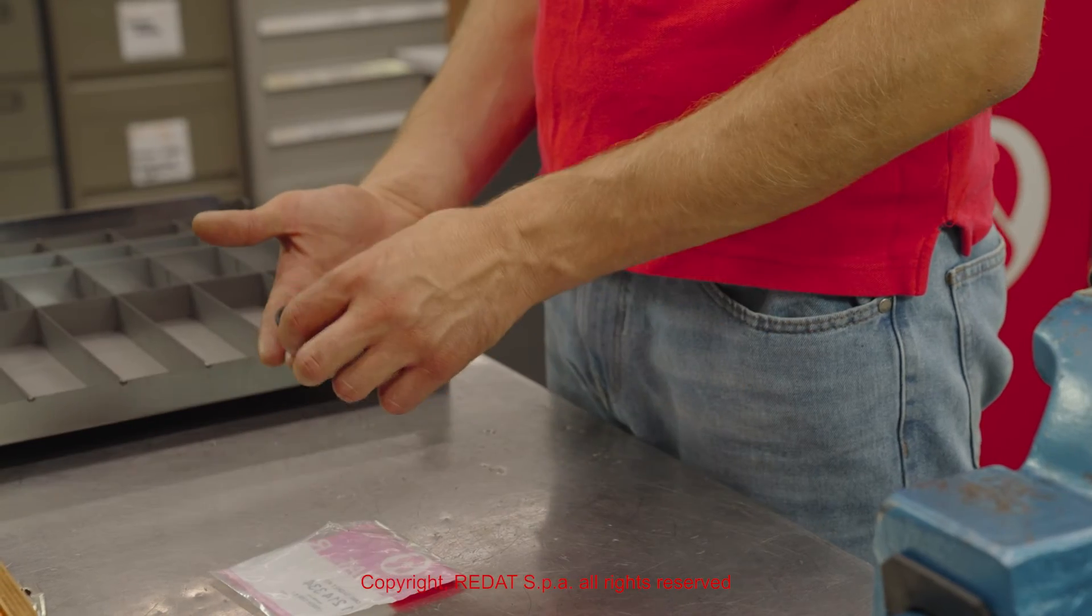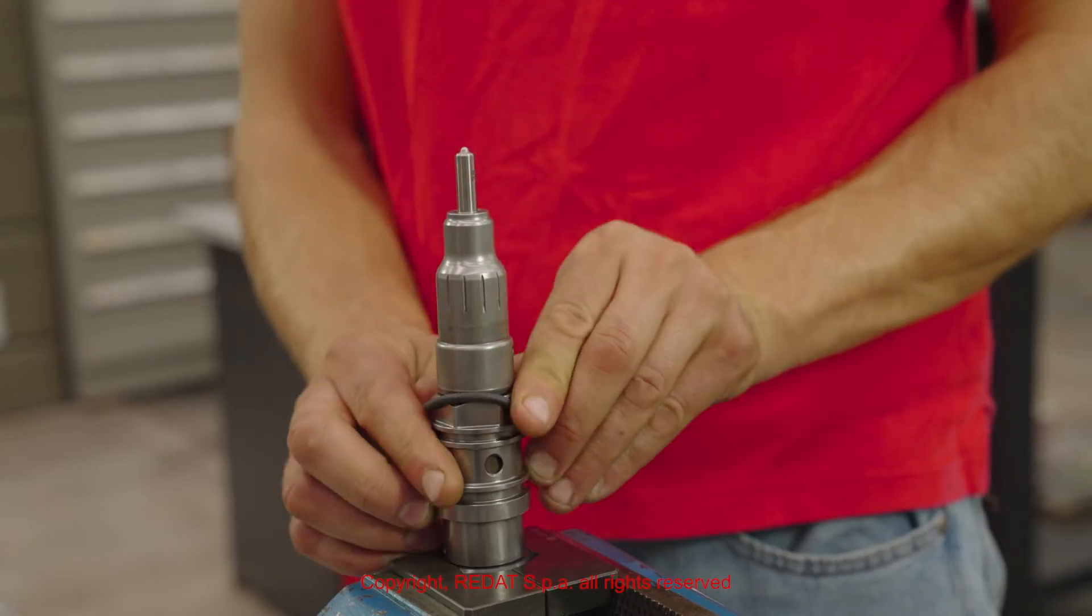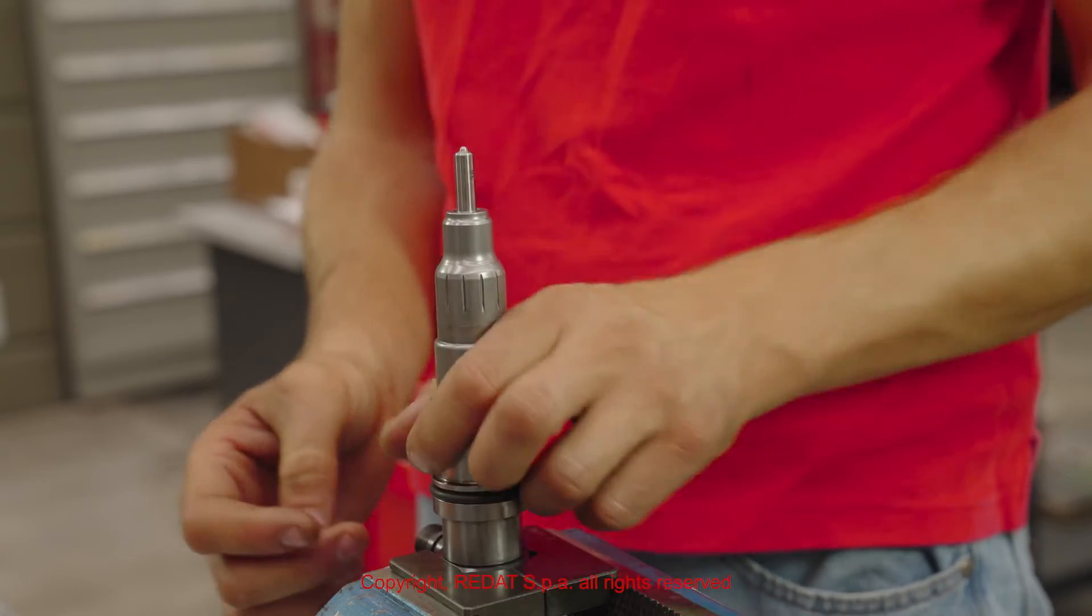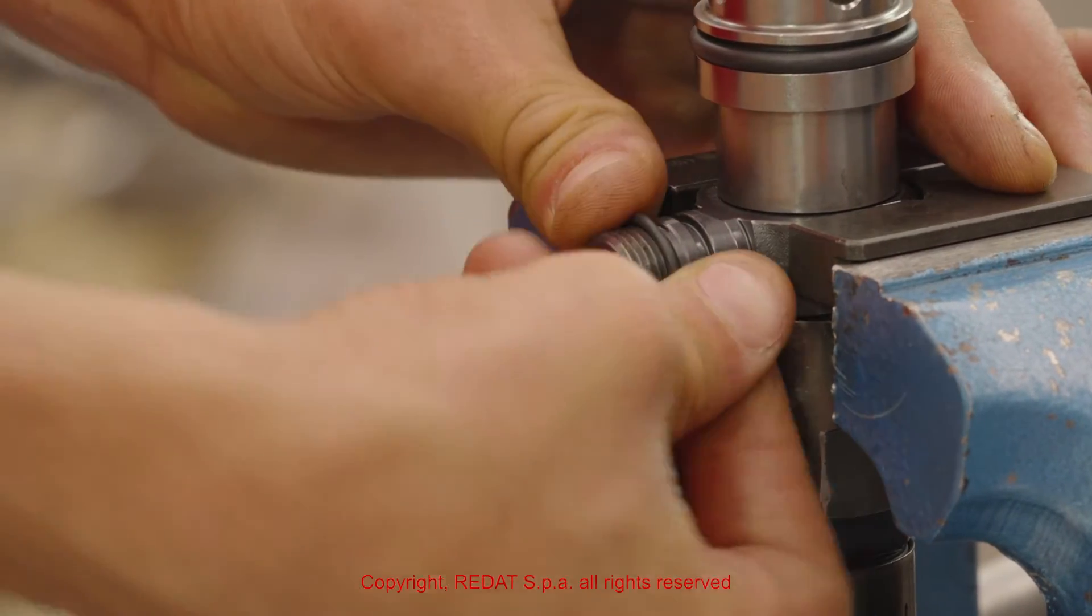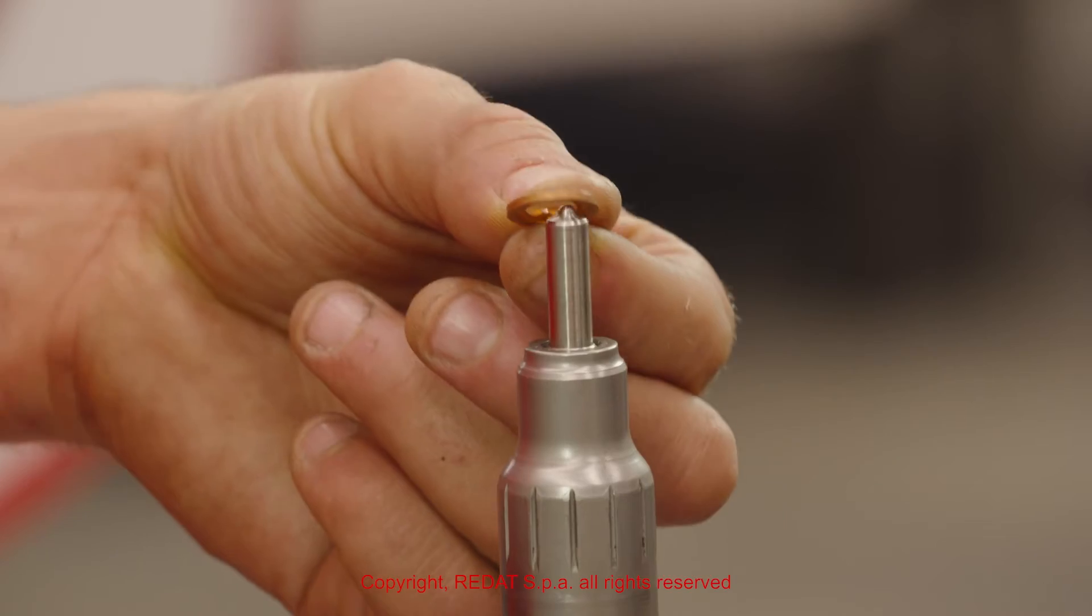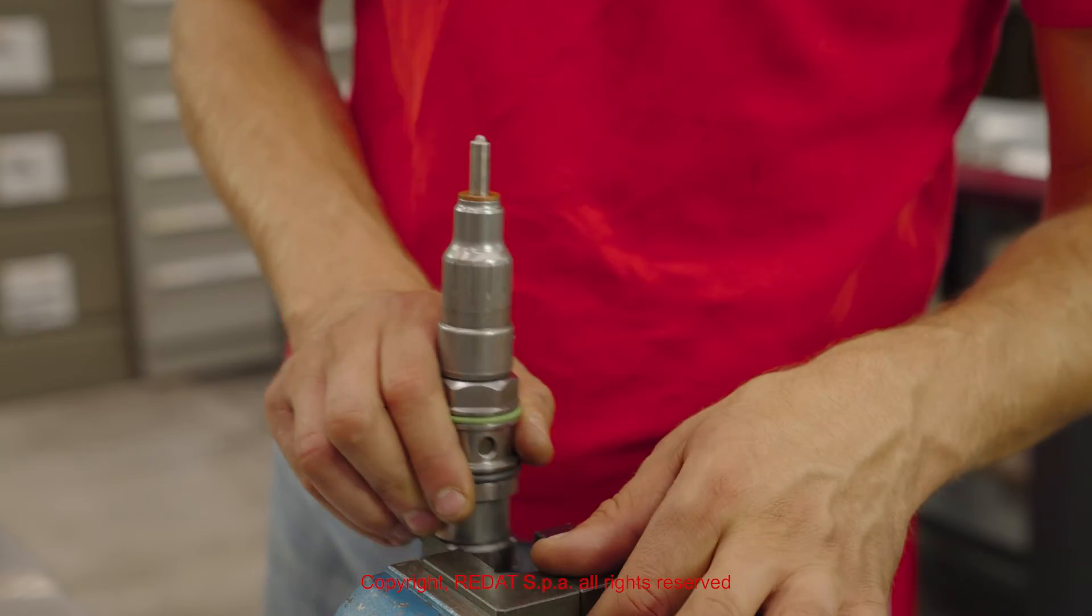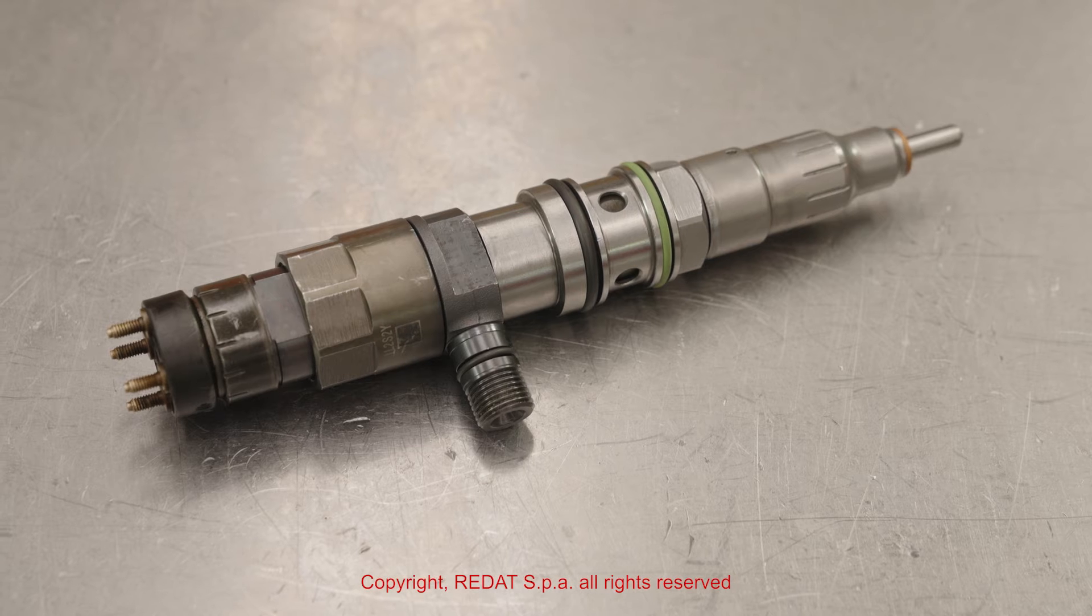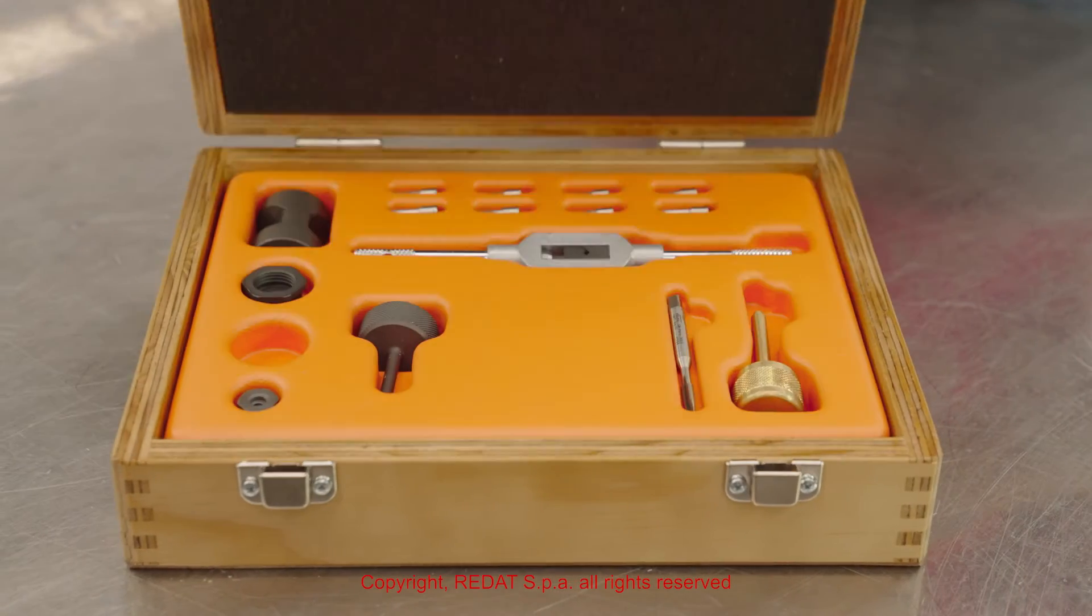Finally, we install the O-rings and the heat shield. The injector is now completely assembled. We will now show you the procedure to disassemble and reassemble the filter on the Bosch CRIN 4.2 using the REDAT tools.